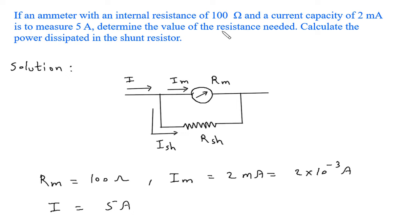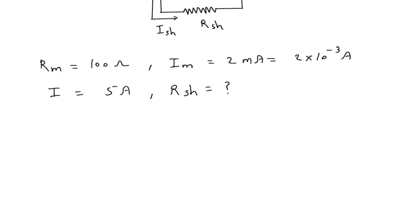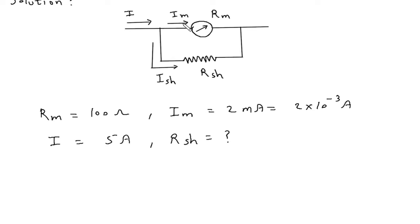Determine the value of resistance needed — we have to find RSH. The voltage across the ammeter and the voltage across the shunt will be the same because they are in parallel. So we can write: Im into Rm is equal to Ish into Rsh.